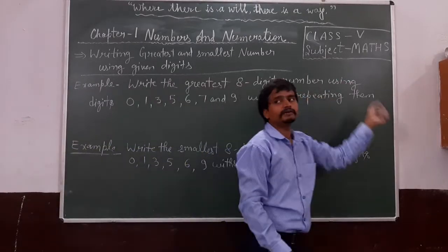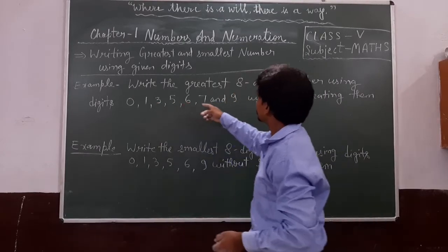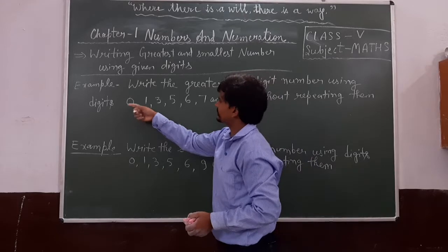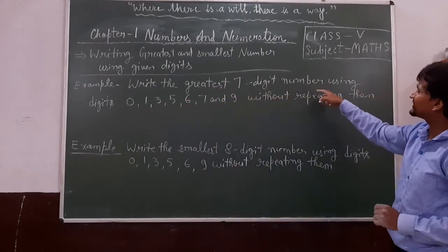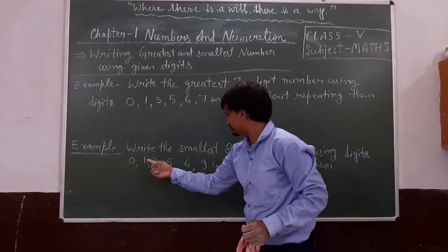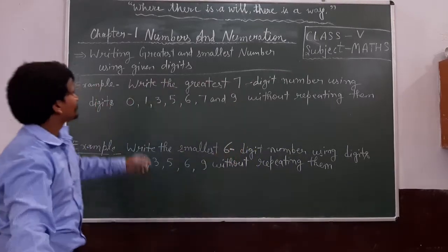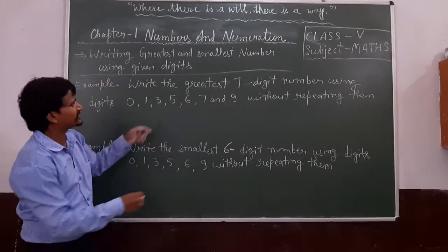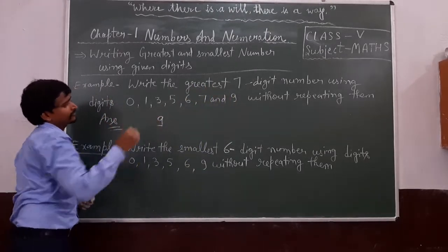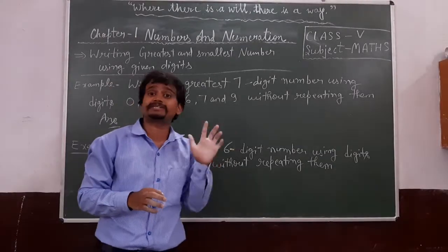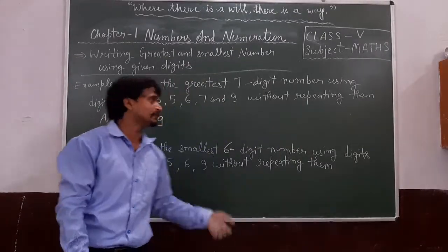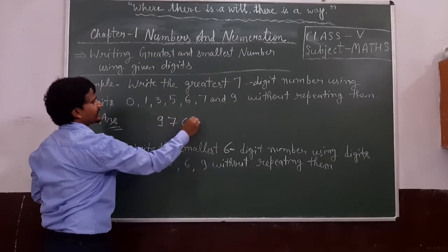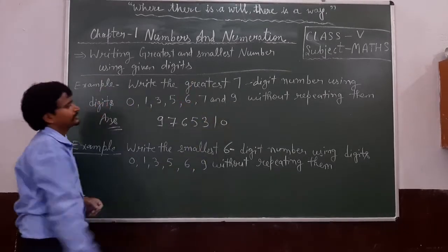Write the greatest 7-digit number using the given digits. The digits given are 7 digits. Since we have to write the greatest 7-digit number, we start from the biggest digit. Select the largest digit, which is 9. Then arrange in descending order: 9, 7, 6, 5, 3, 1, 0. So this is your greatest 7-digit number.